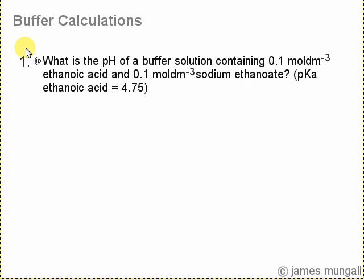Here's the question. What is the pH of a buffer solution containing 0.1 mol per decimetre cubed ethanoic acid, 0.1 mol per decimetre cubed sodium ethanoate, where the pKa of the ethanoic acid is 4.75.